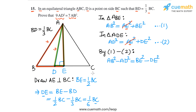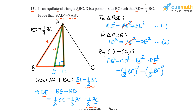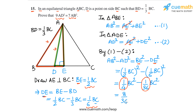Now we write both BE and DE in terms of BC. We know BE is half of BC and DE is one-sixth of BC. Substituting: we get (BC/2)² minus (BC/6)², which gives one-fourth of BC squared minus one thirty-sixth of BC squared. Converting to a common denominator: nine thirty-sixths minus one thirty-sixth equals eight thirty-sixths of BC squared.